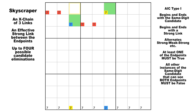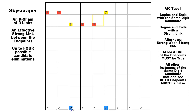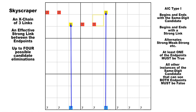For two-string kites and skyscrapers, we are going to use a slightly different coloring system than the one we use for other AICs and loops. For two-string kites and skyscrapers, it makes more sense to color the two endpoints yellow and the two weakly linked candidates blue. So we've got a strong link here and another strong link here, and here are the candidates to be eliminated — those four sevens. One of the endpoints must be true; the four sevens that are colored red can be eliminated as false.